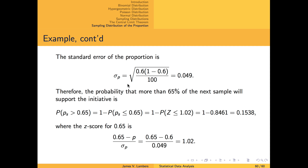We can then use this normal distribution to estimate the probability that our next sample will have a sample proportion greater than 65% by computing a z-score for 0.65 using the mean and standard deviation of our sampling distribution of a proportion, and then using this z-score with a standard normal distribution and basic probability properties to obtain this probability. Given that the sample proportion is 0.6 and the standard error of a proportion is a little less than 5%, and by the empirical rule 68% of the sample proportions should fall within one standard deviation of the mean, it is not surprising that the probability is not very high.